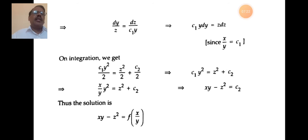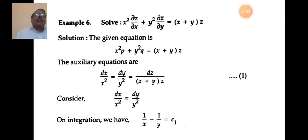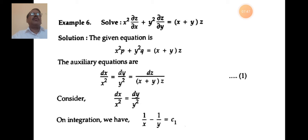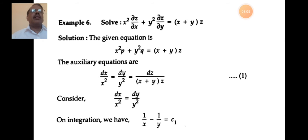In this way we can find the solution of a partial differential equation by applying multipliers or grouping. Next, solve the differential equation x²·∂z/∂x + y²·∂z/∂y = (x + y)z. Comparing with the standard equation P·p + Q·q = R: capital P = x², capital Q = y², capital R = (x + y)z.